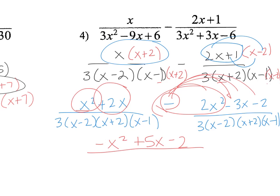That doesn't factor out any further. And then I have a positive 2. So my denominator stays as 3 times x minus 2 times x plus 2 times x minus 1.